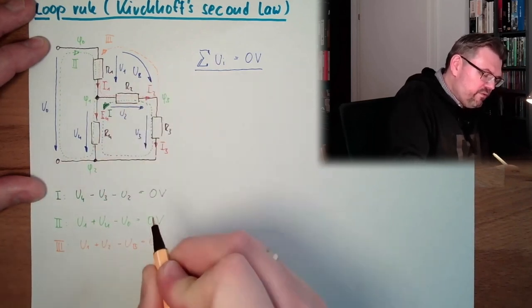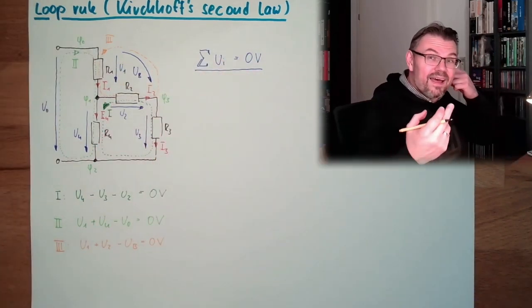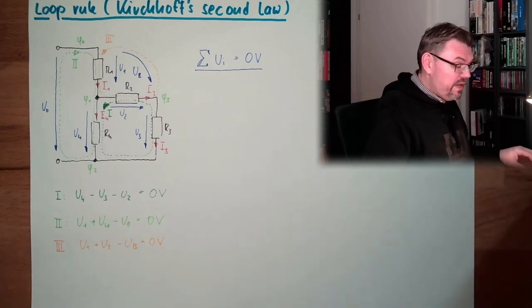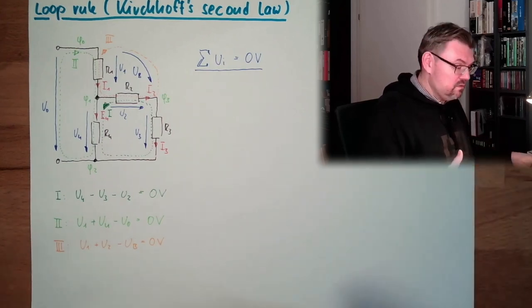So loop number three, first one we arriving is U1, second one plus U2 because it's going in the same direction, and now this Ub is negative minus Ub. This is zero volts, so I have to introduce this Ub because between here and here there might be a voltage.